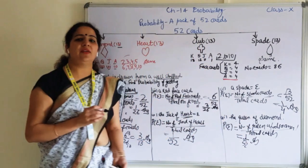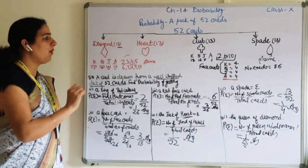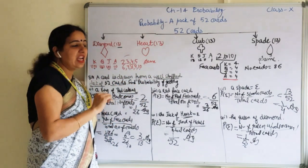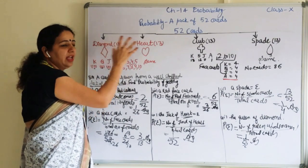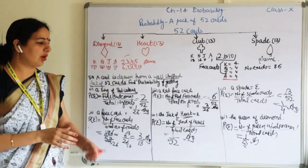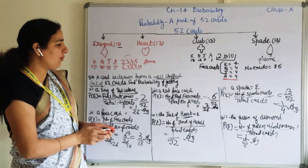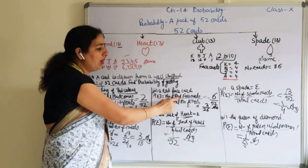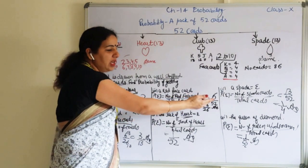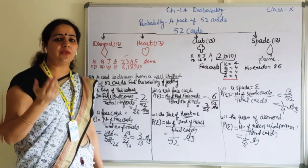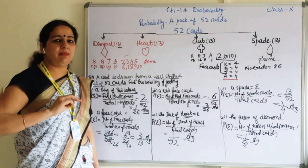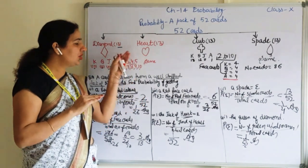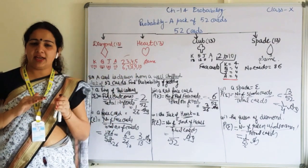Students, what we observe here: if we are bounding the cards with color, the probability is reduced. If we bound the card with shape, the probability is reduced even more. Face cards are 12. When talking about red face cards, they are only 6. When talking about face cards of hearts only, they are only 3. So bounding by color and bounding by shape both reduce the probability.